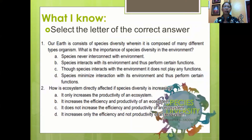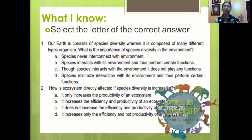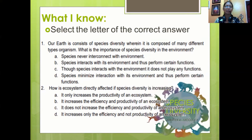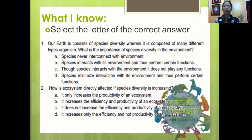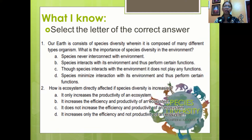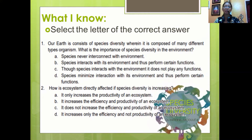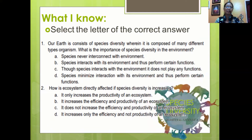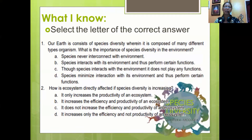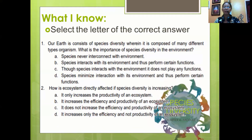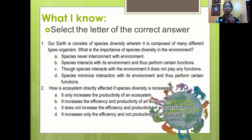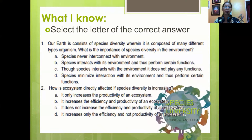For the pre-test, you're going to select the letter of the correct answer. Number 1: Our Earth is conscious of species diversity, wherein it is composed of many different types of organisms. What is the importance of species diversity in the environment? A. Species never interconnect with the environment. B. Species interact with its environment and thus perform certain functions. C. True species interacts with the environment but does not play any functions. D. Species minimize interaction with its environment and thus perform certain functions.